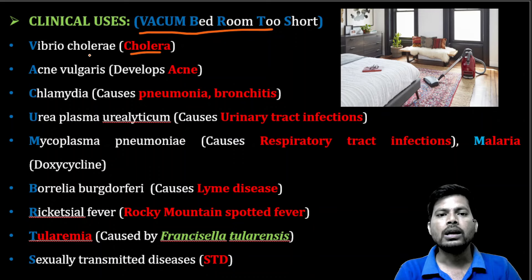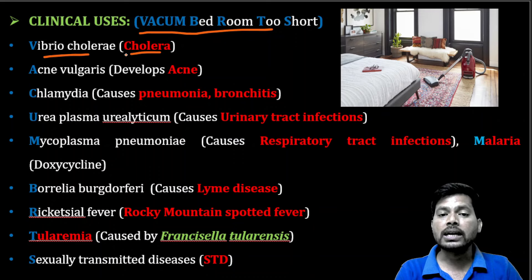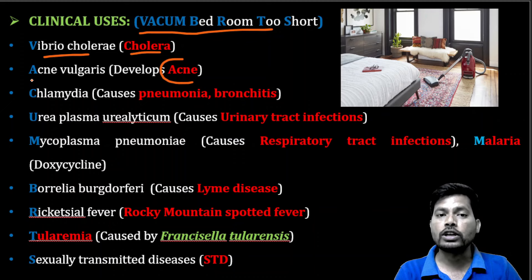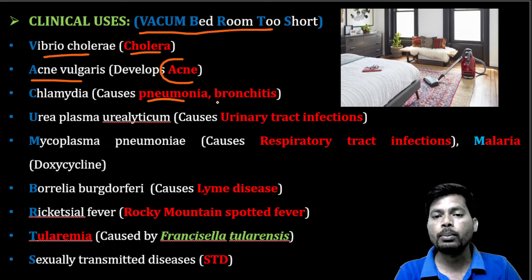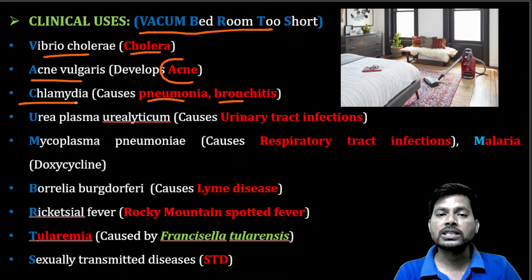Tetracycline is useful in the treatment of cholera caused by Vibrio cholerae. It also helps in reducing acne and pimples caused by Acne vulgaris. Tetracycline is useful in lung infections or inflammation like pneumonia and bronchitis, as Chlamydia species can cause lung infections.